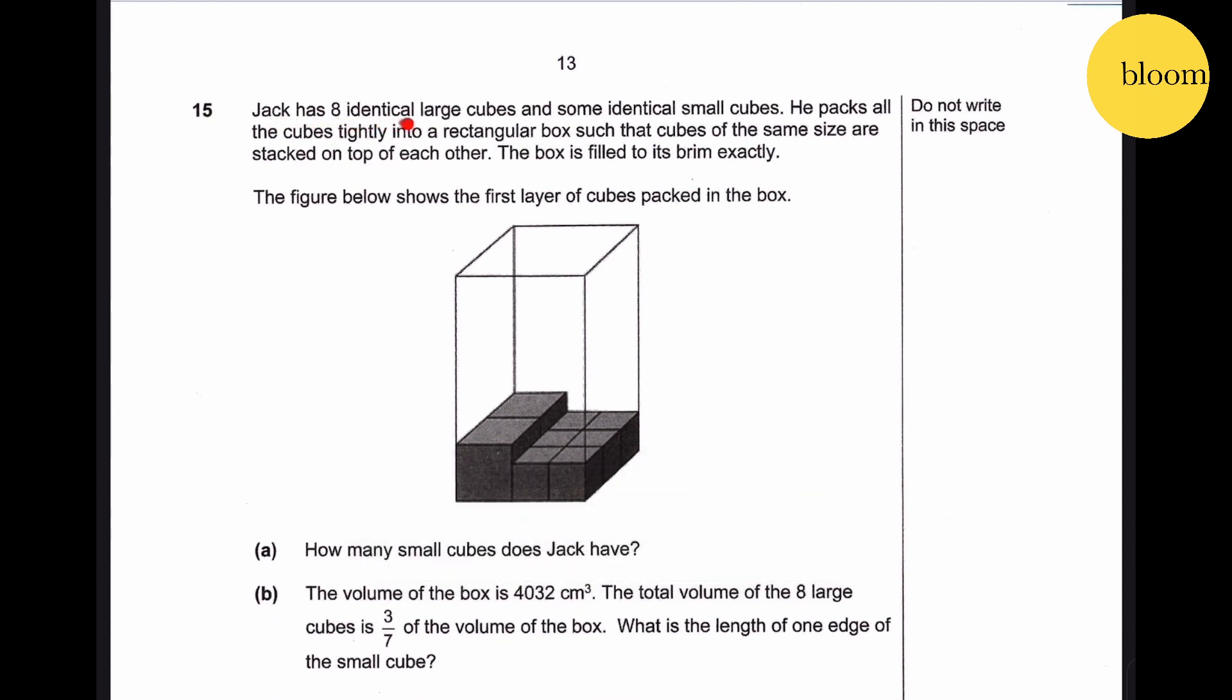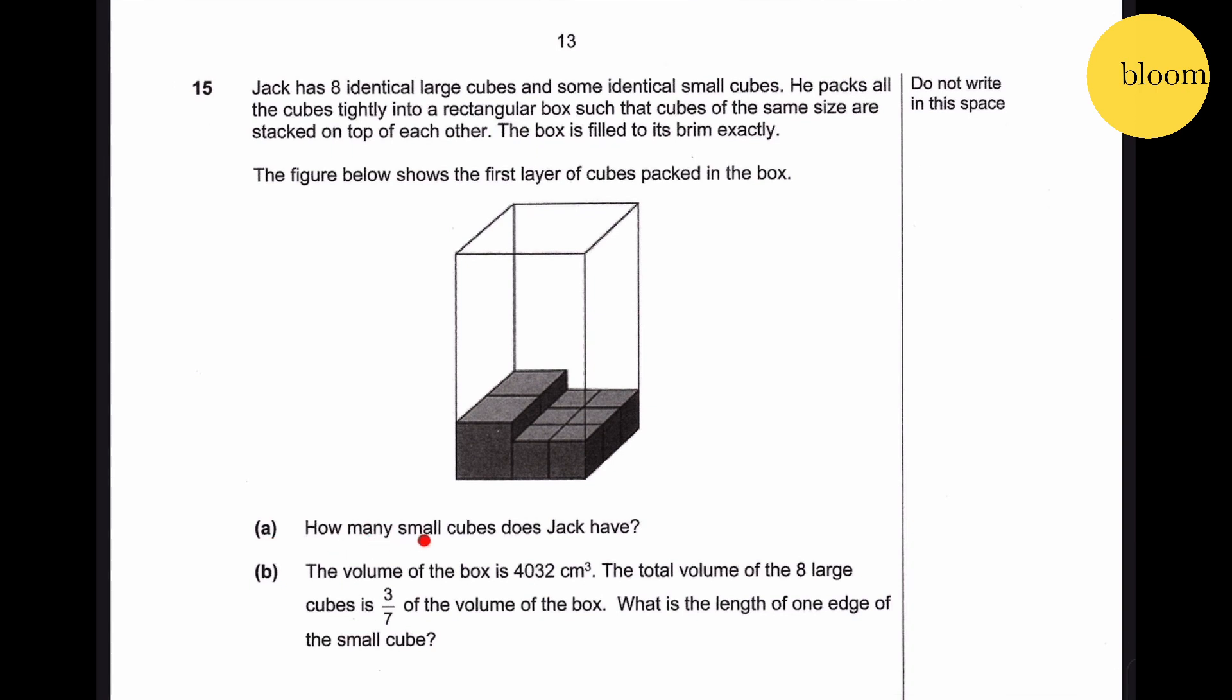Jack has 8 identical large cubes and some identical small cubes. He packs all the cubes tightly into a rectangular box such that cubes of the same size are stacked on top of each other. The box is filled to its brim exactly. The figure below shows the first layer of cubes packed in the box. Part A: How many small cubes does Jack have? From the big cubes we estimate that you have four layers of big cube.